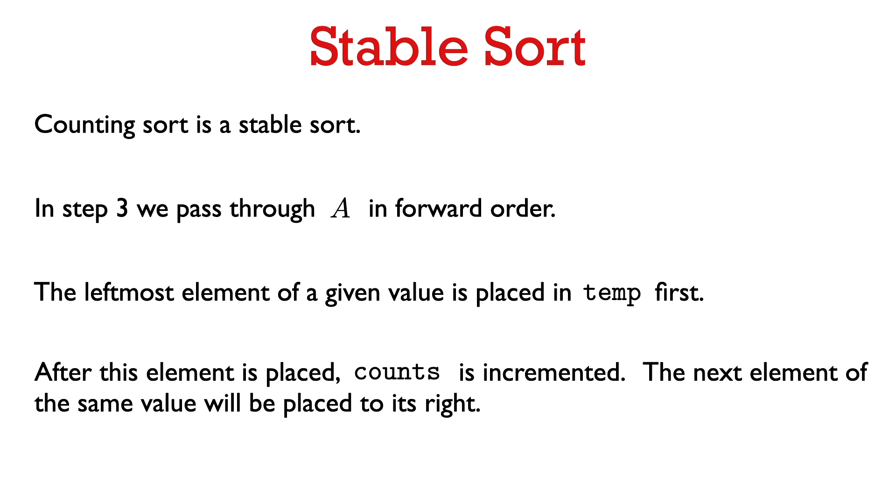Counting sort is also a stable sort, ensured by the design of step 3. We make a forward pass through A so that the leftmost element of a given value is the first to be placed in temp. After placing it, we increment counts, so any subsequent element with the same value is placed to the right of the first one. Therefore, counting sort is a stable sort.